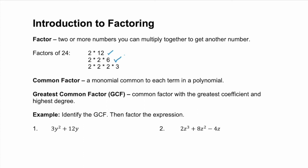Three factors: 2, 2, and 6 — they also multiply to 24. Or if we prime factor, the four factors 2, 2, 2, and 3 also multiply to 24.